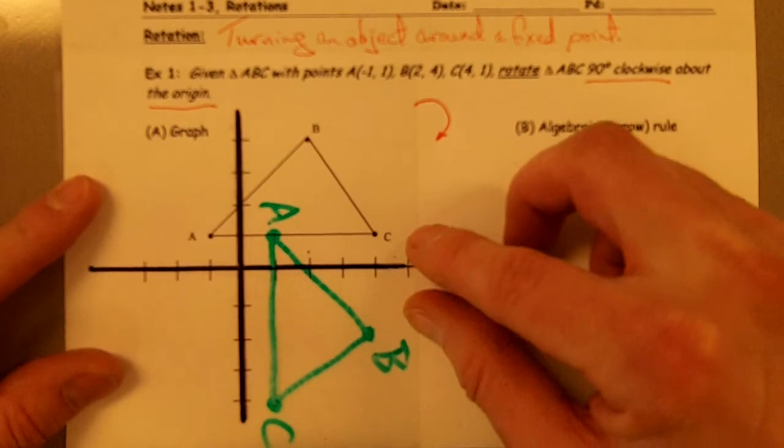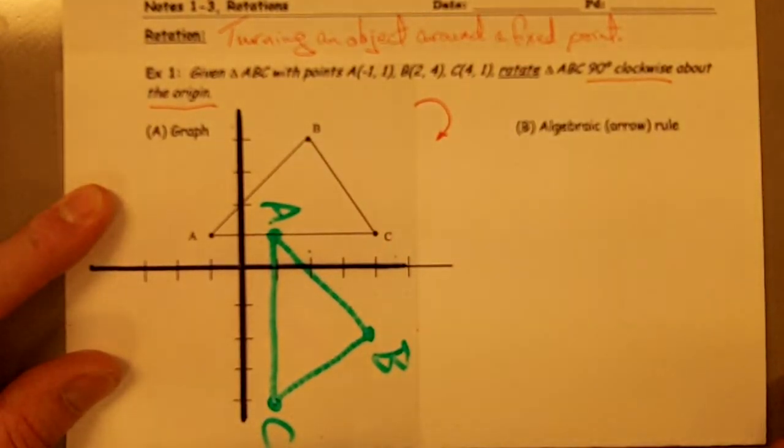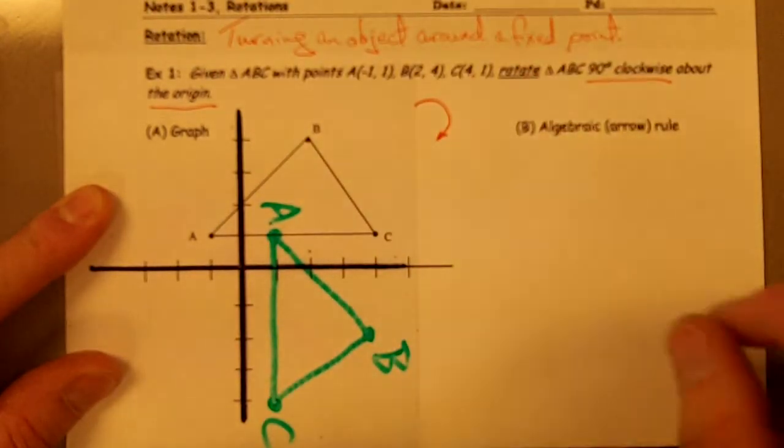And then when I'm done, I want to make sure my axes are lined up again. Here I've got a rotated triangle. I've taken my original triangle and I've rotated it 90 degrees clockwise.